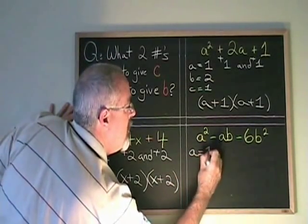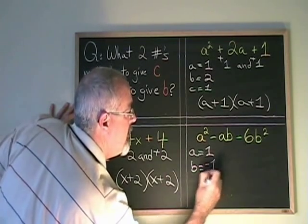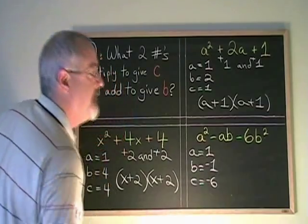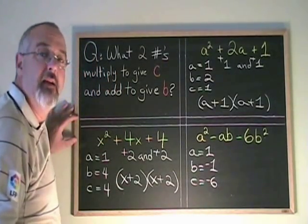a is equal to 1, b is equal to negative 1, and c is equal to negative 6.